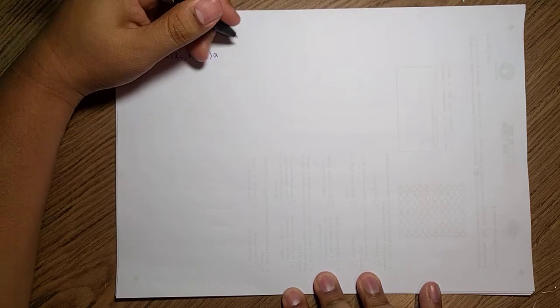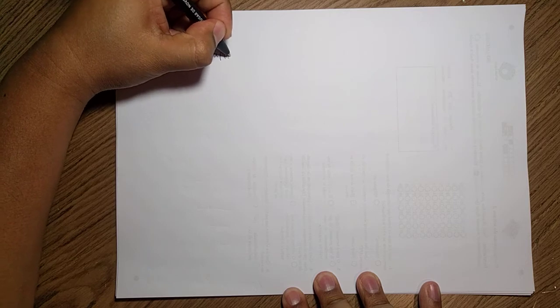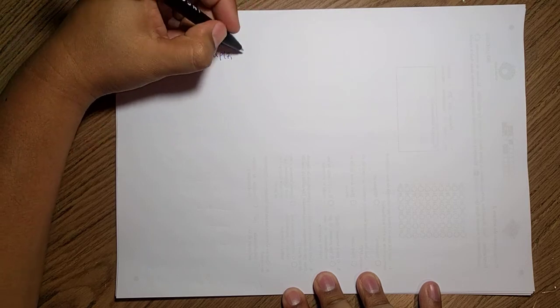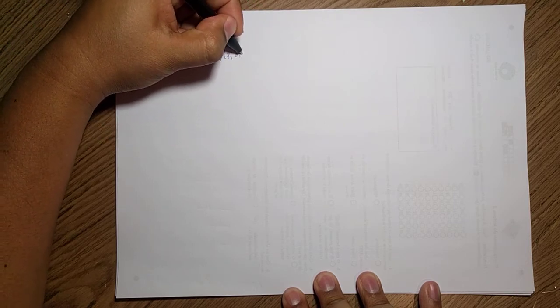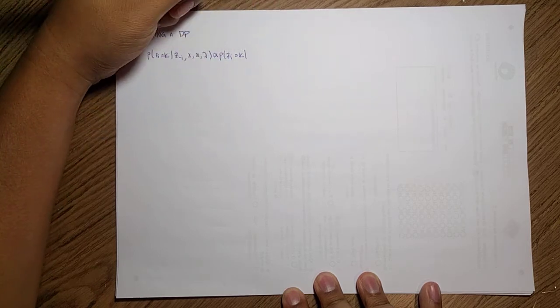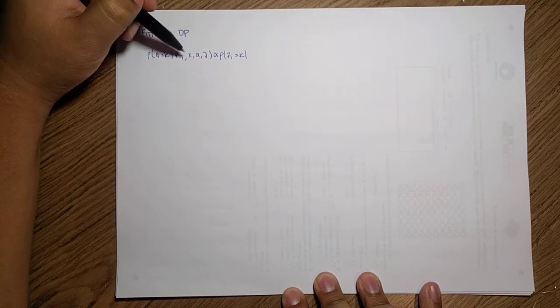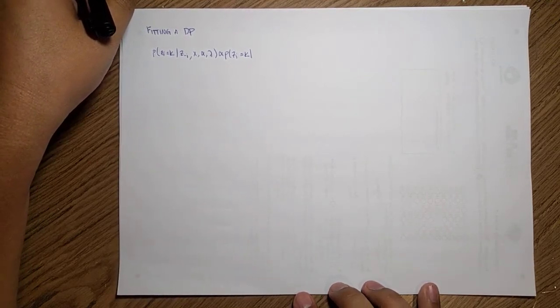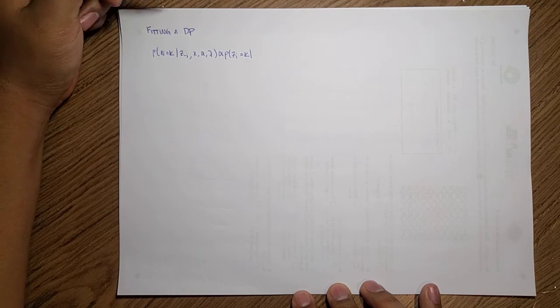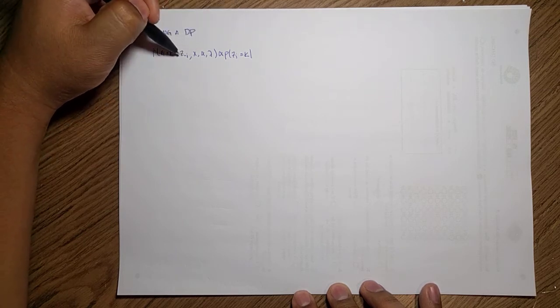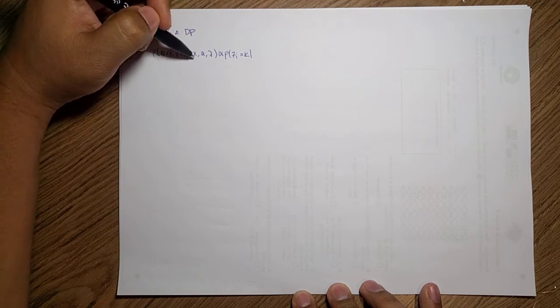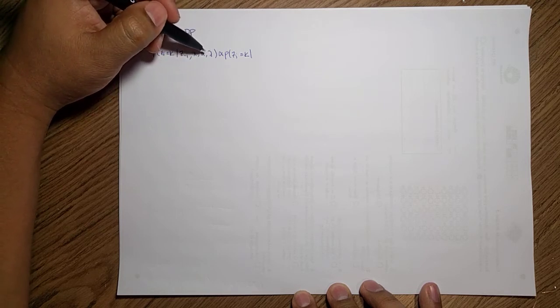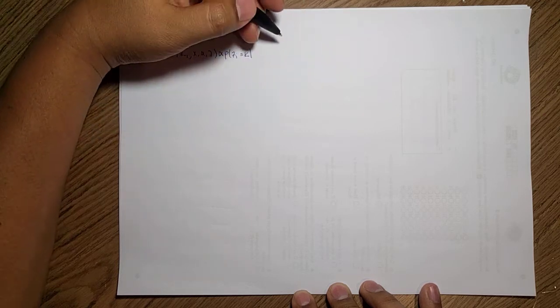This should be proportional to the probability of zi being equal to cluster k. We want to use some kind of model dependency here and predict this zi based on the other latent variables and our parameter that corresponds to the classes.